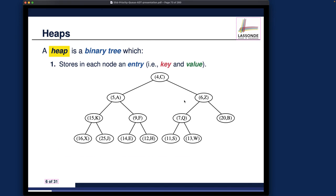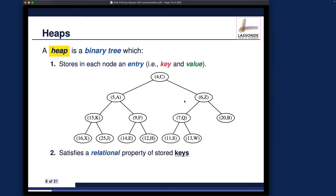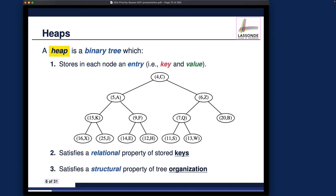There are two properties we want to check against any binary tree to see whether or not it's actually a heap. Number one is the relational property, which constrains the key values for every entry stored in the tree. The second is the structural property, which is concerned with how the binary tree is organized — specifically how parent and child nodes are arranged. We'll talk about both one by one.